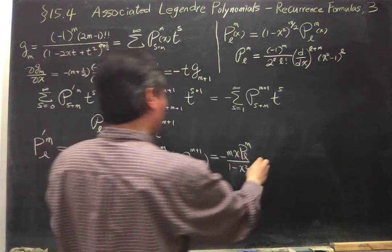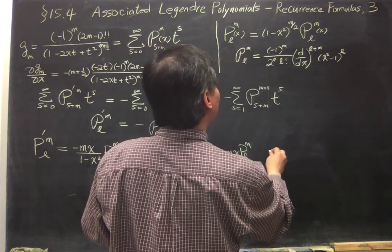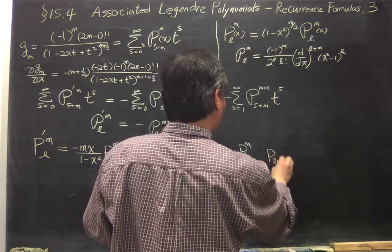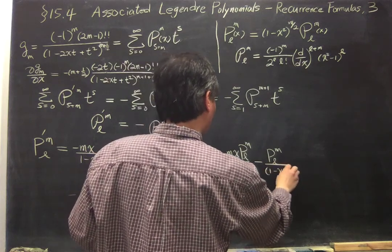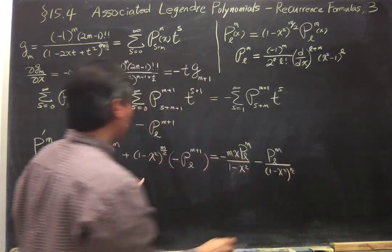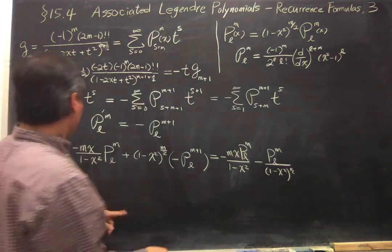And this one will give you minus P_{l,m+1} over (1 - x^2) to the 1/2.